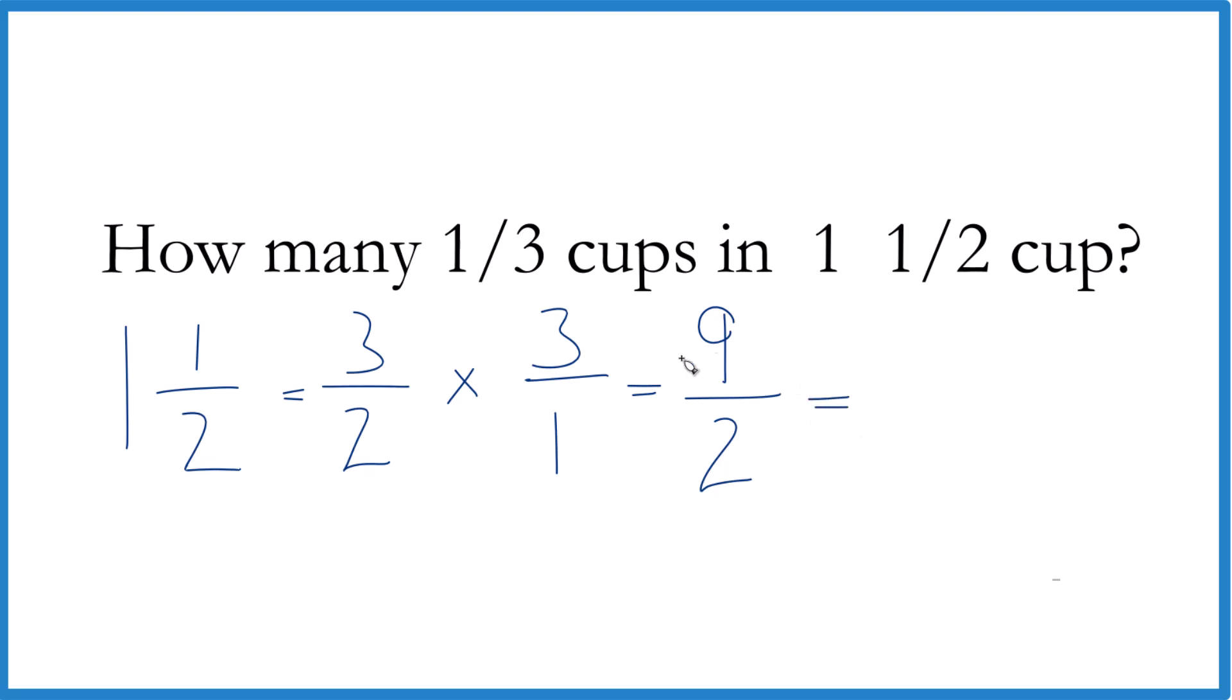This is an improper fraction. We could change it to a mixed number. Two goes into nine, two times four is eight. So two times four is eight, and then we just have the one left over, bringing the two across. So in answer to our question, four and one-half of these one-third cup measures make one and one-half cups.